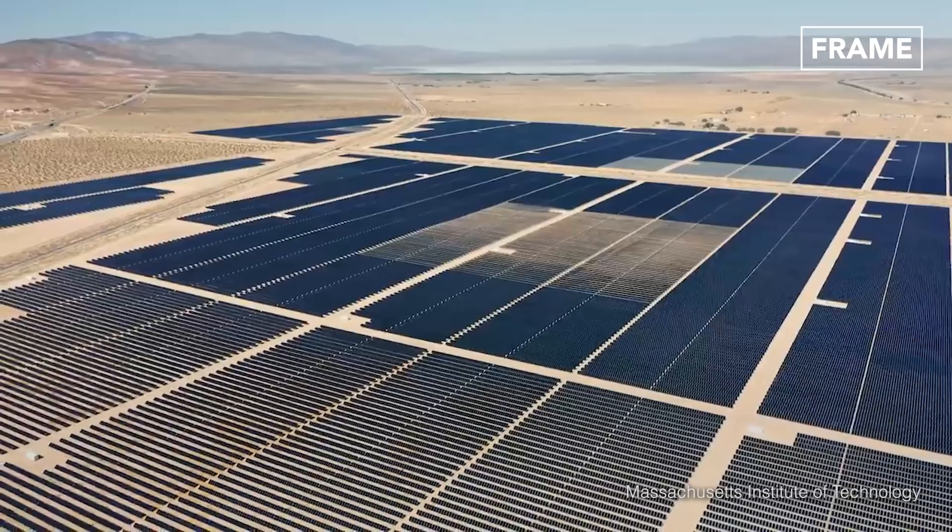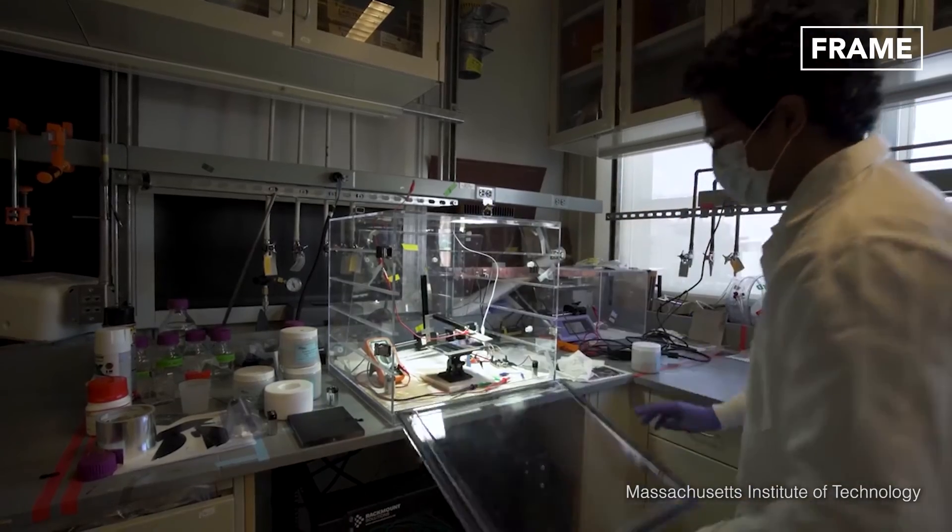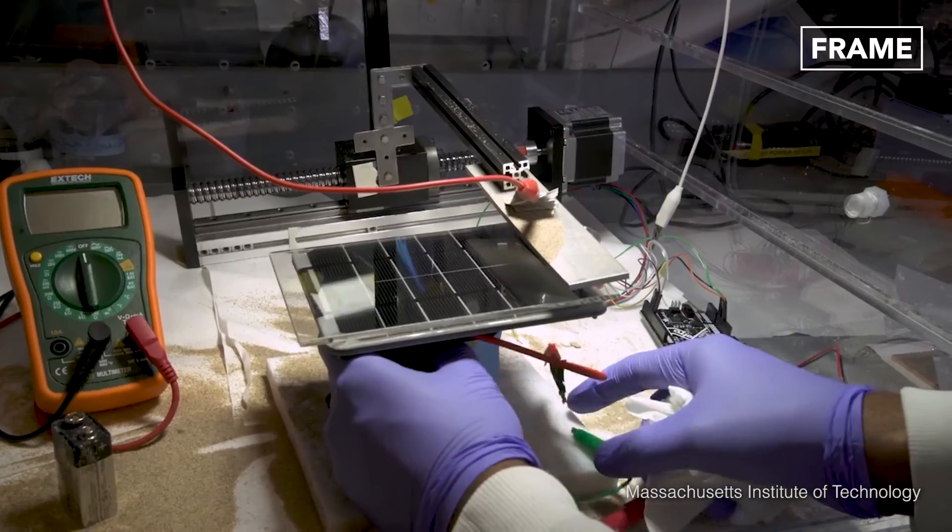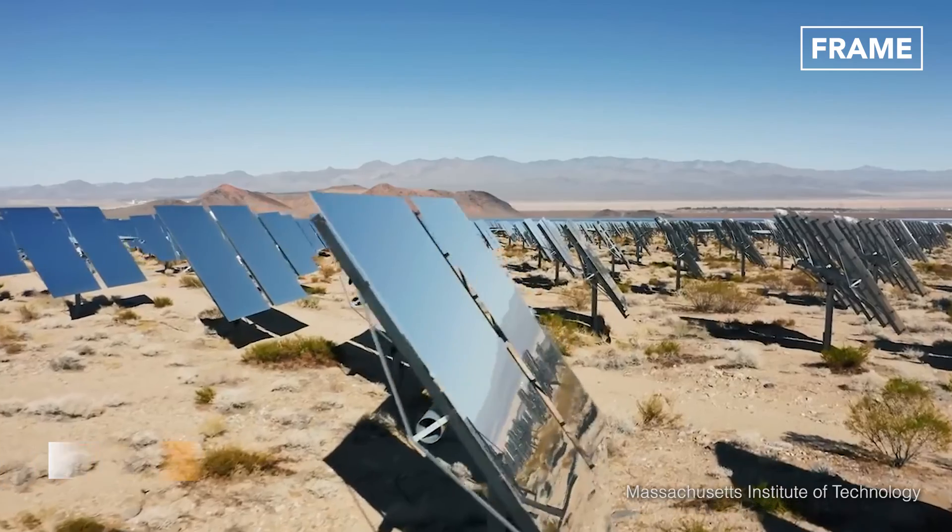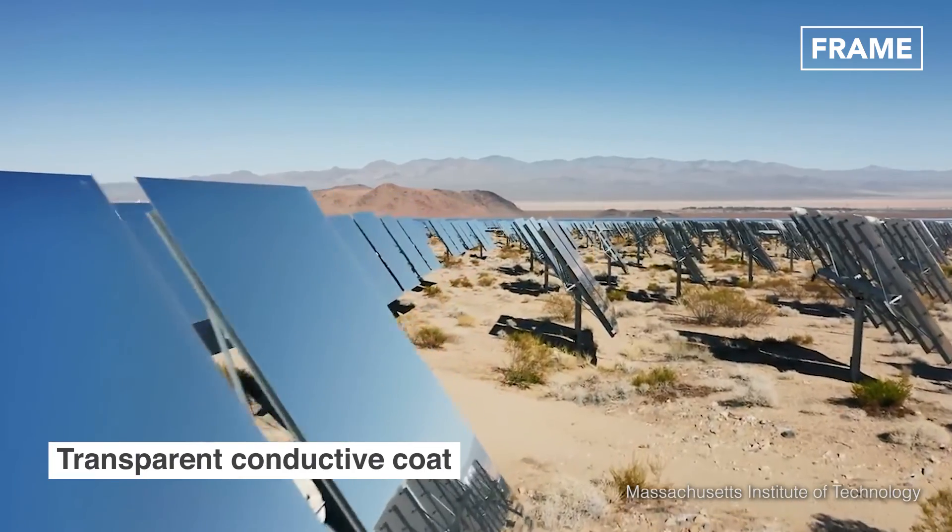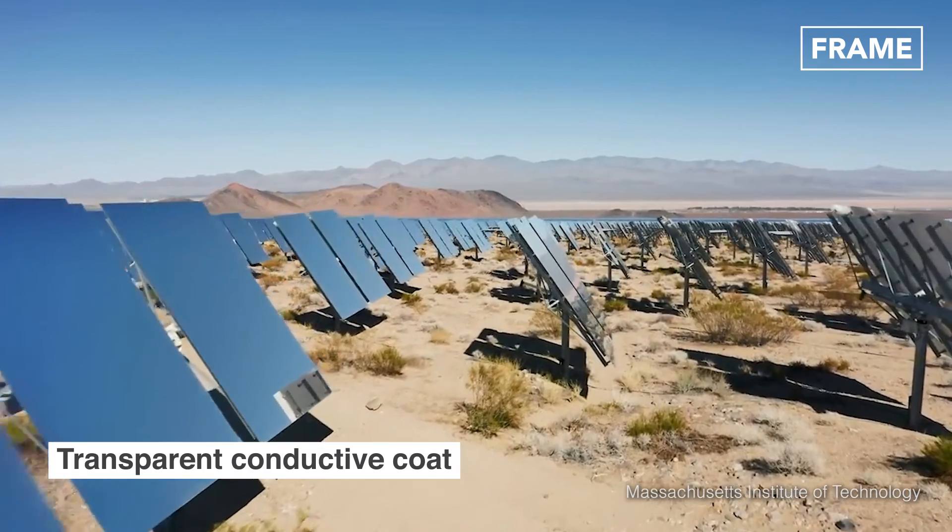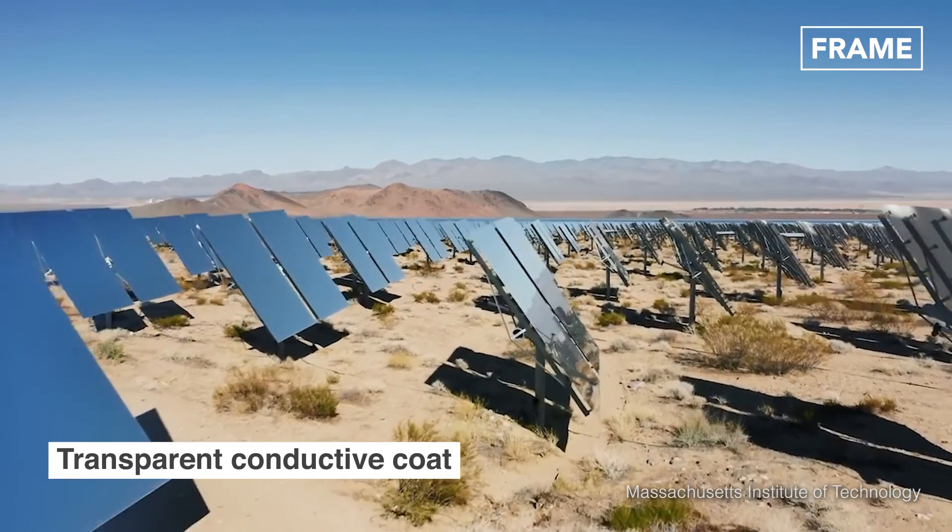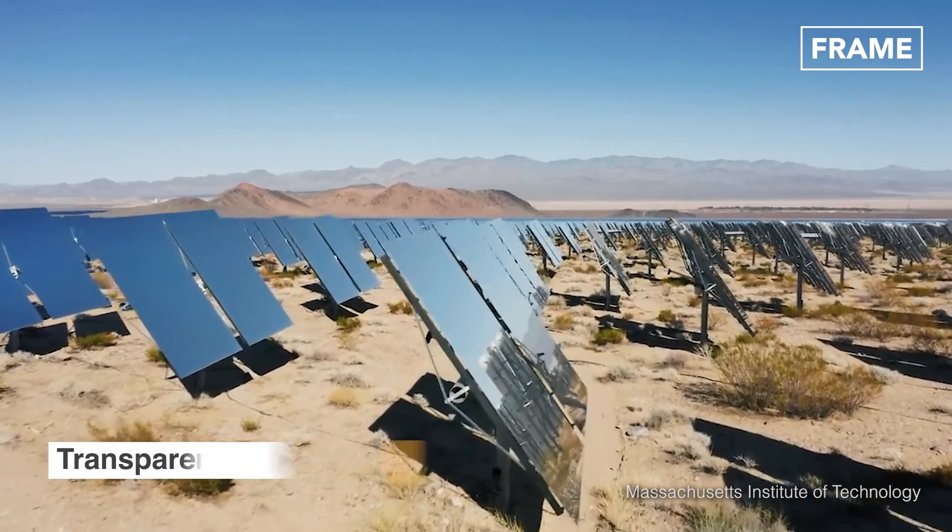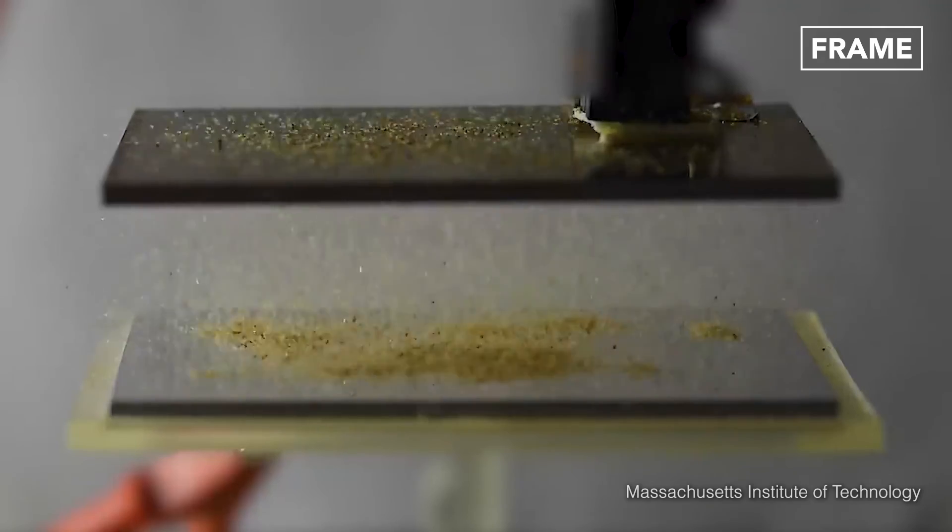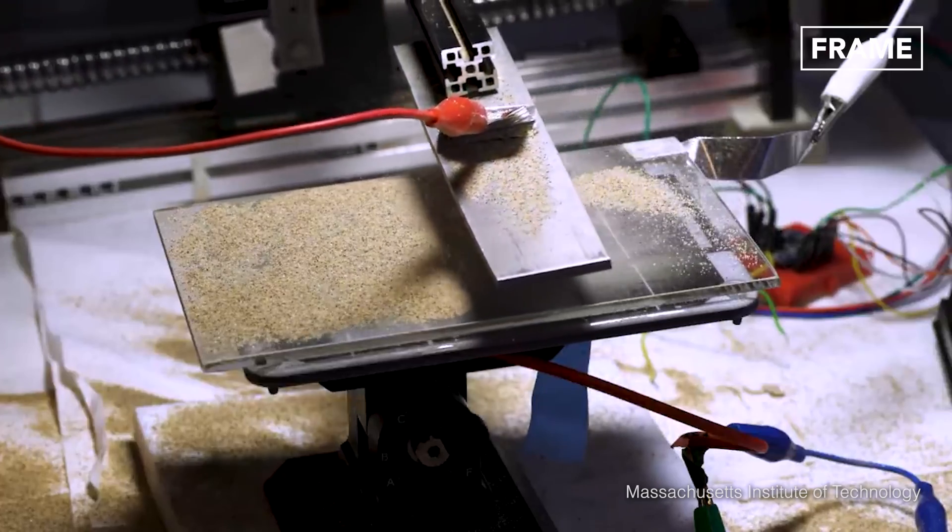In their constant quest for advancement, scientists have also created a new method for removing debris. A transparent, conductive surface currently being developed at MIT can be used to coat solar panels. This coating electrically charges any dust or sand that accumulates on the surface.